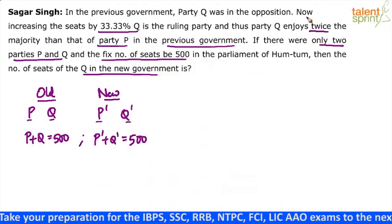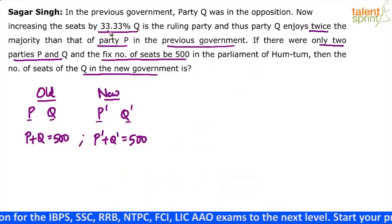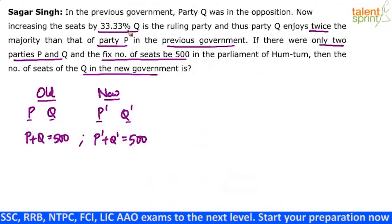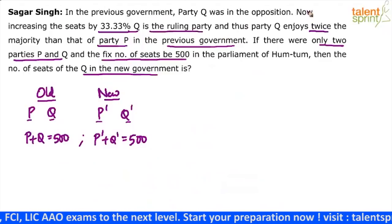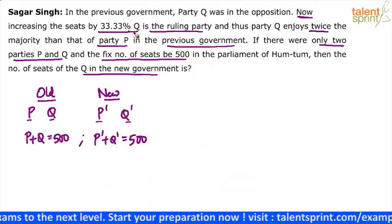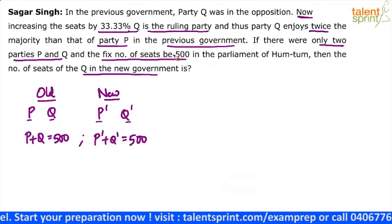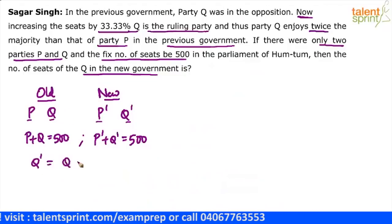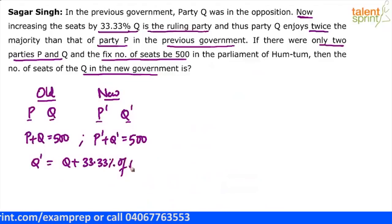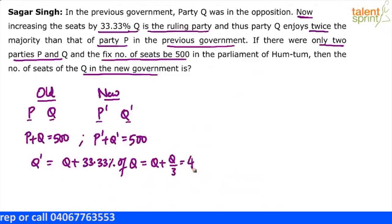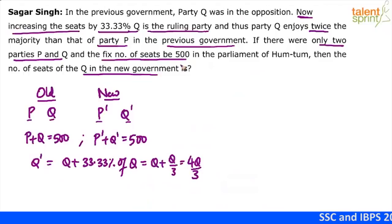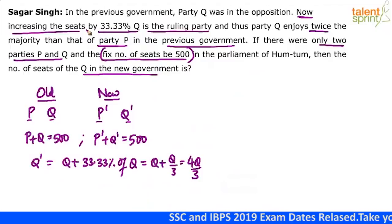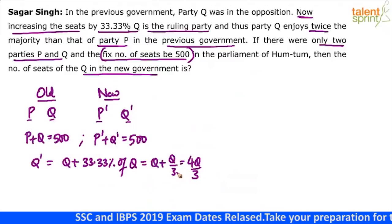The other point given in the question is: the number of seats increment for Q is 33.33%. Increasing the seat by 33.33%, Q has become the ruling party. Q increased its seats by 33.33% and thus it came to the ruling party's position, which means Q dash is 33.33% more than Q. So the equation formed will be: Q dash equals Q plus 33.33% of Q, which is Q plus Q by 3, or 4Q by 3. So basically Q dash equals 4Q by 3. The total number of seats are fixed — what increased is Q's share by 33.33%, giving them 4Q by 3 seats.